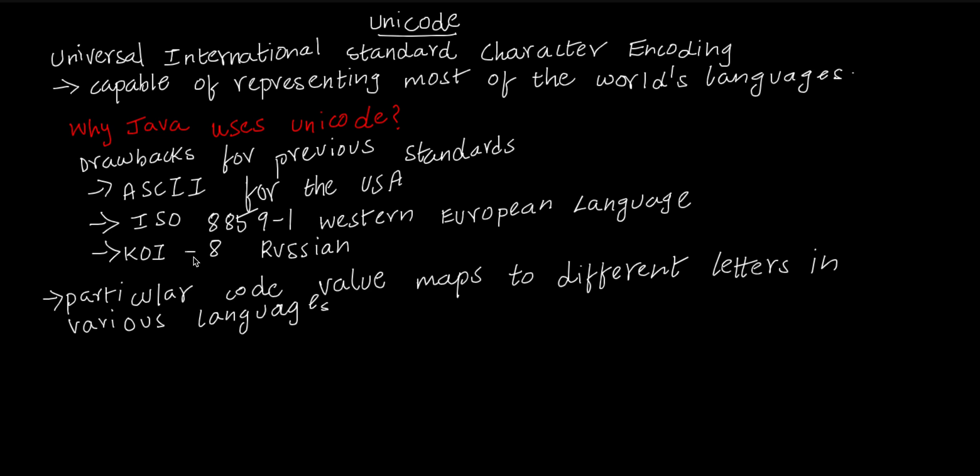We have standards in other countries too. So what is the problem? The problem is that a code in ASCII and ISO 8859-1 may match the same code value, but represent different characters. So for the same code, there are different characters, which causes different problems for developers.